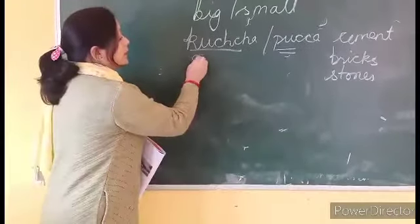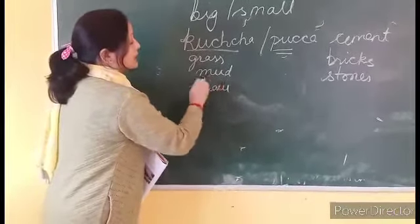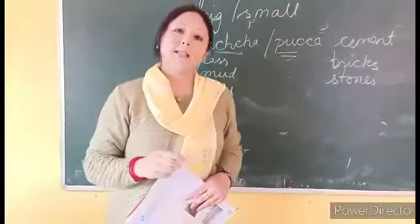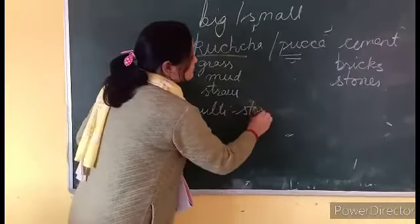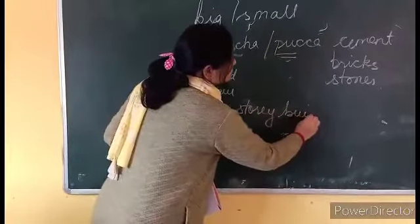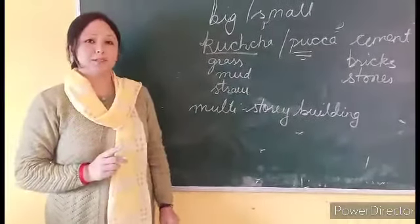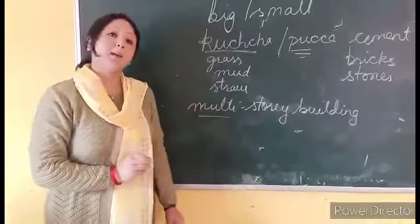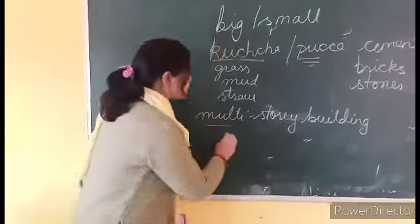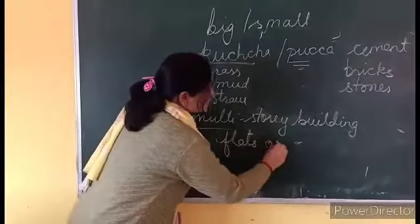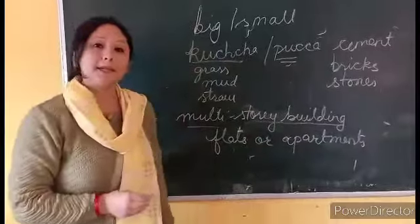Kacha houses are made up of grass, mud, and straw, and you find this type of house in the villages. Then you also have multi-storied buildings. Sometimes a tall building has many houses inside it. That type of house is called flats or apartments, and you find them in big cities.